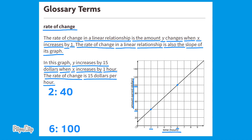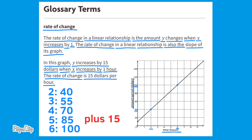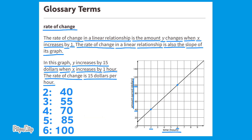It says that the rate of change is $15 per hour, so let's test that out. Starting from the second hour: $40 plus $15 equals $55; $55 plus $15 equals $70; $70 plus $15 equals $85; and $85 plus $15 equals $100. So far, it checks out just fine.